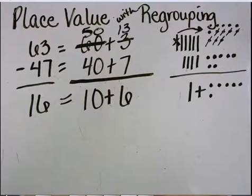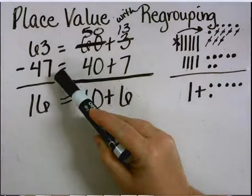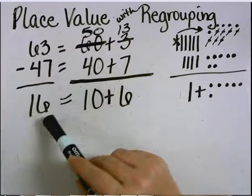Breaking apart each digit by place value before subtracting helped me to know I needed to regroup to have enough in the ones place to subtract. I now know 63 minus 47 equals 16.